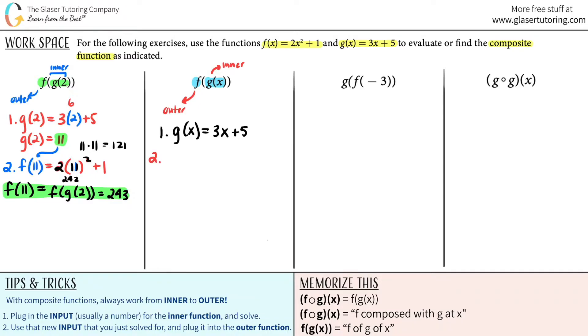Now, moving on to the second part, you plug in this answer for the outer function, which is f. So f of 3x plus 5. Now I have to go to the f function. Now we got to plug in 3x plus 5 into that x squared. So let's do that. We have 2 times 3x plus 5 squared plus 1. Now we got to do some math. We got to foil this.